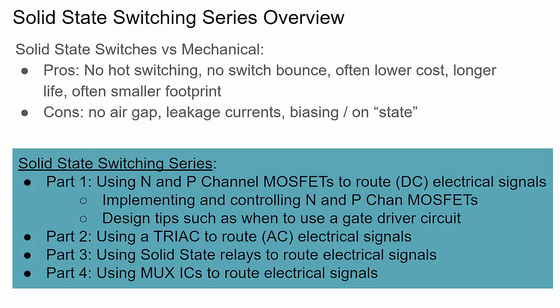For the solid-state switching series, in part one we're going to talk about N-channel and P-channel MOSFETs — the simplest type of solid-state switch. We'll talk about how to implement them, how to control them, how to bias them, and we'll focus on the specs and functionality related to using MOSFETs as switches. MOSFETs can also be used as amplifiers, but we're not going to focus on that.